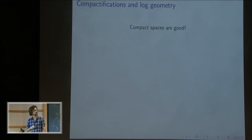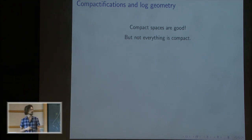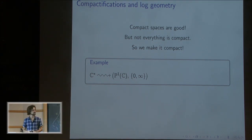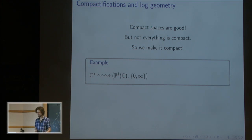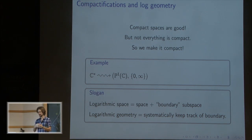Another theme in geometry is that we really like compact spaces — they behave much better than non-compact spaces. But most things aren't compact. For example, C* is not compact. So we make it compact: instead of thinking of C* by itself, we think of the projective line P¹, which is compact, and remember that there are two special points — zero and infinity — that we remove to get back to C*. There's a branch of geometry that systematically deals with this, called logarithmic geometry, where a logarithmic space is essentially a space where you mark some fixed boundary subspace of codimension one. Logarithmic geometry systematically keeps track of these things.